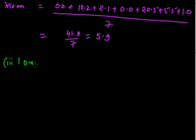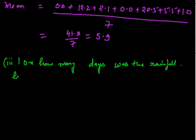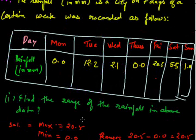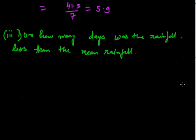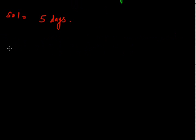Now the third part is on how many days was the rainfall less than the mean. We have the mean rainfall is 5.9, so let us see on how many days we have less than 5.9 rainfall. 1, 2, 3, 4, and 5. So we have total 5 days on which we have rainfall less than 5.9, that is the mean rainfall. So the solution is 5 days.